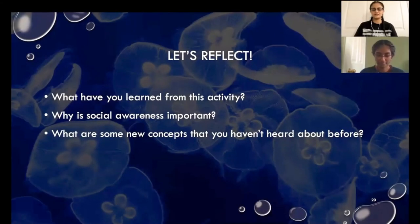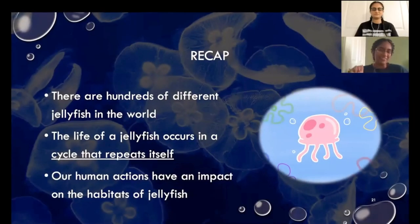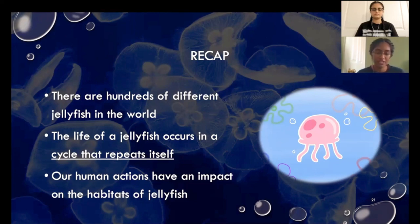Now that we're done the lesson, let's reflect. What have you learned from this activity? Why is social awareness important? What are some new concepts that you haven't heard about before? You can pause the video if you need more time. Alright, let's recap what we've learned today: there are hundreds of different jellyfish in the world that come in different shapes, sizes, and colors. The life of a jellyfish occurs in a cycle that repeats itself. Our human actions have an impact on the habitats of jellyfish, including global warming, overfishing, and coastal development.